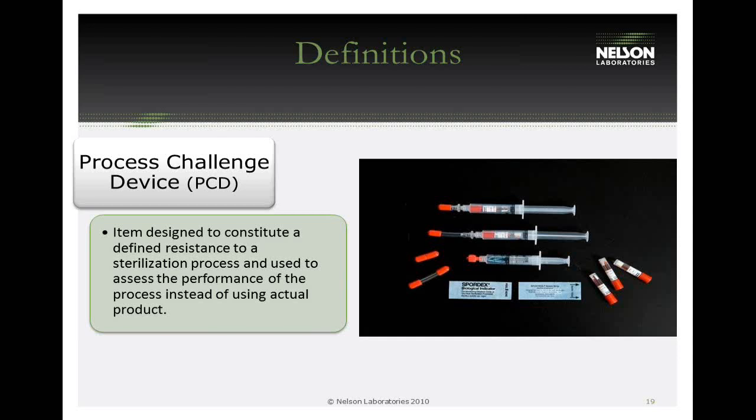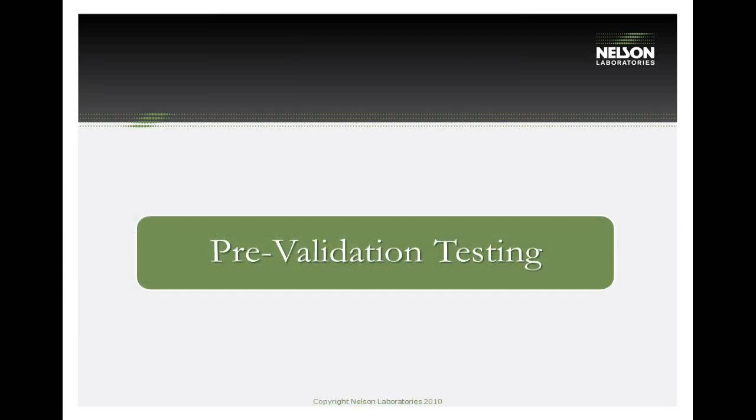A process challenge device (PCD) is used when the actual device is difficult to inoculate, costs over $1,000, or when using actual product would be wasteful. A PCD mimics the sterilization resistance of the product — something simple and inexpensive like a syringe — and the BI is placed inside it instead of in the actual device. The PCD does not need to look like the product; its resistance must be equal to or greater than the most resistant location of the actual product.